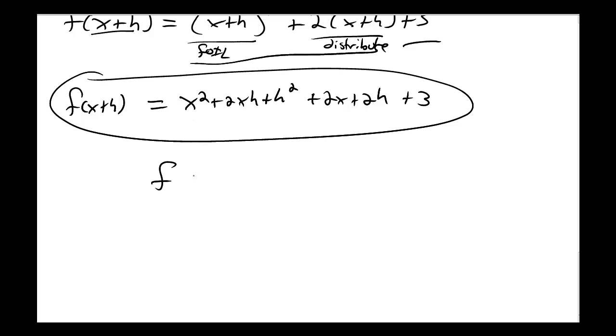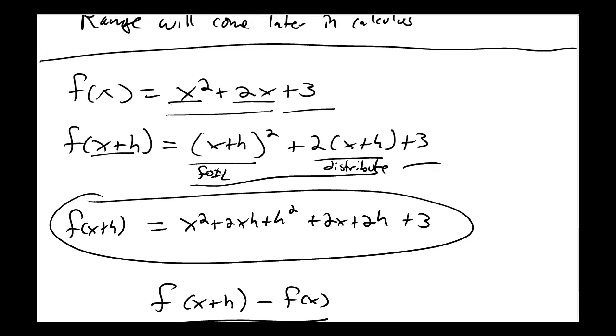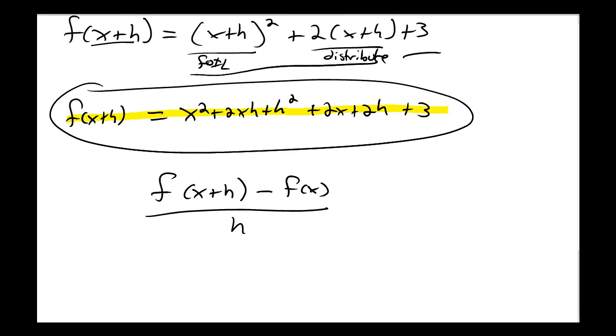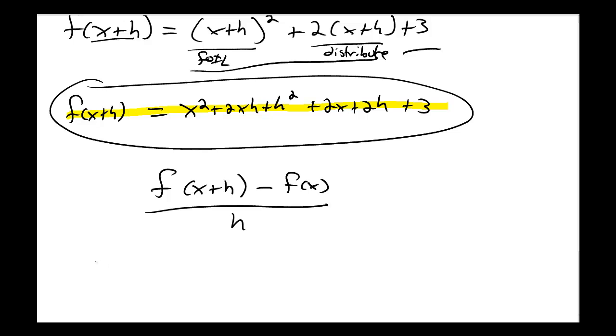In calculus we think of using this because we think of something called the difference quotient. And the difference quotient says that f of x plus h minus f of x all divided by h is going to be something we're often interested in calculating. Let's calculate that out for this. My f of x is x squared plus 2x plus 3. f of x plus h is x squared plus 2xh plus h squared plus 2x plus 2h plus 3. So I'm just going to plug these different values into my function here. For my f of x plus h part I have x squared plus 2xh plus h squared plus 2x plus 2h plus 3.